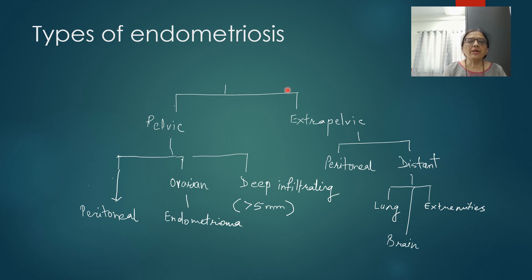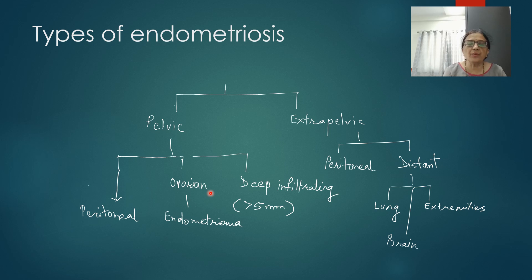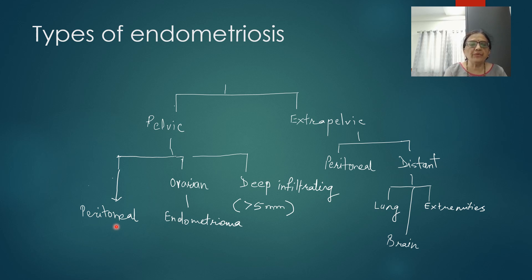Looking at the broad types of endometriosis, we can divide it into pelvic and extrapelvic types. This is called the phenotypic classification. It is very important to appreciate and remember the three variants in the pelvic cavity: first, peritoneal endometriosis, which is superficial, meaning presence of endometriosis in a superficial plane of peritoneum.